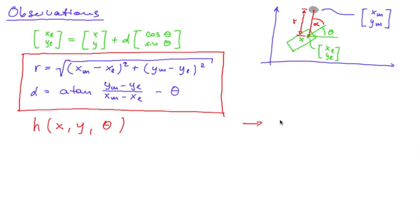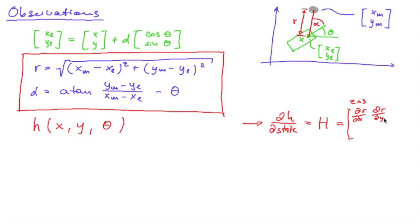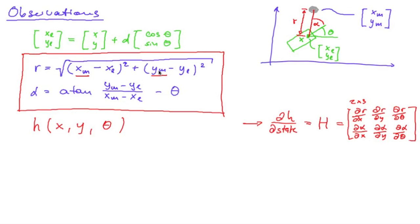We computed partial derivatives of h with respect to the state, which we denoted as capital H. This was a 2×3 matrix consisting of the partial derivative of r with respect to x, y, and theta, and the same for alpha. Those computations were based on the assumption that our landmarks are fixed — so the coordinates xm and ym of the landmark are assumed to be constants, and so they are not part of the arguments the function h takes.